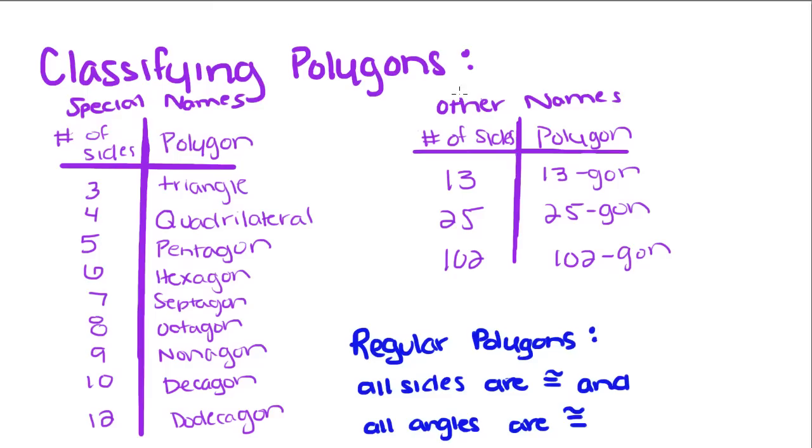A three-sided polygon is called a triangle. A four-sided polygon is called a quadrilateral. Five-pentagon, six-hexagon, seven-septagon, eight-octagon, nine-nonagon, ten-decagon, and twelve is a dodecagon.